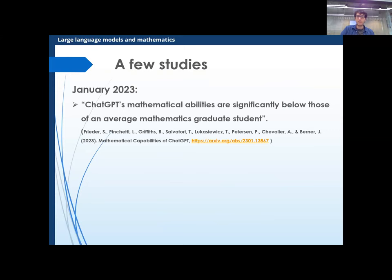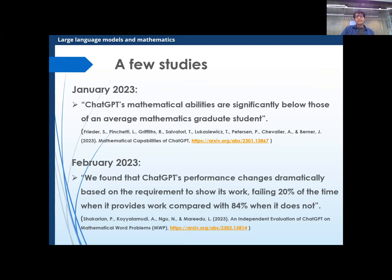In February, something very interesting: they found that GPT's performance in maths changed based on the requirement to show its work. If you think about how language models work, it makes sense — because every new token that summarizes what you want to do steers the model in the right direction, augmenting the chances it picks the right answer. So if you ask it to think about stuff and reflect, GPT improves because it's sort of self-prompting itself in the right direction.